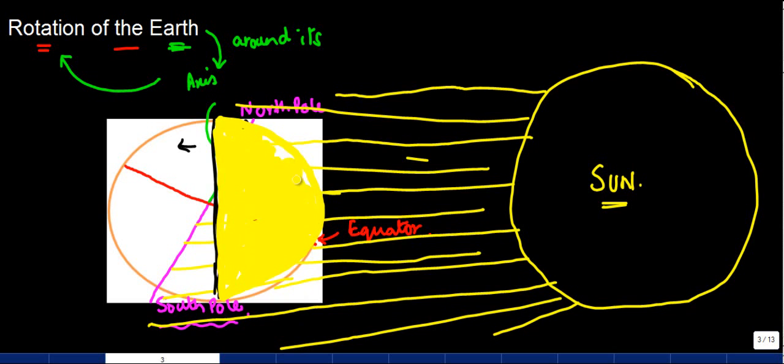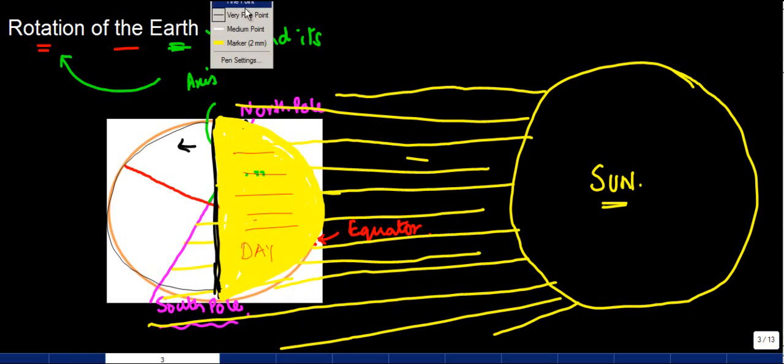Why? Because the Sun rays are falling directly on this particular piece, right? So this part of the Earth will have a day, whereas the one which is lying on the other side, which is this portion, is going to have night. So this piece is going to have night.